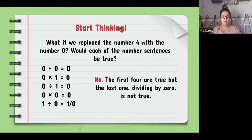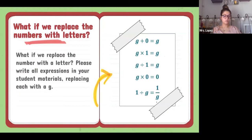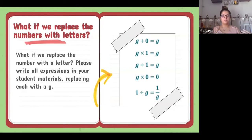A letter in an expression can represent a number when that number is replaced with a letter. So what if we replace the numbers with letters? Instead of having numbers we're going to have a letter — for example, the letter G. Please write down all the expressions with G: G plus zero equals G; G times one equals G; G divided by one is G; G times zero is zero; one divided by G is one over G. Pause the video for two minutes to write down those expressions.